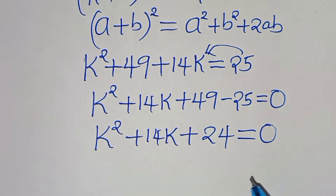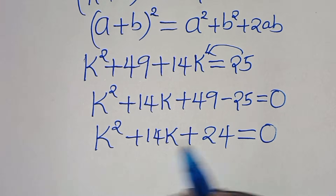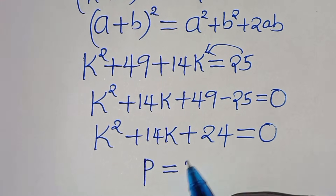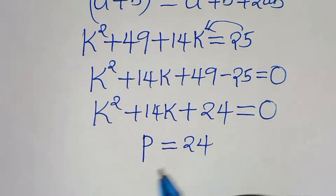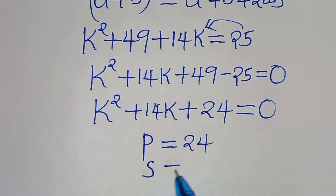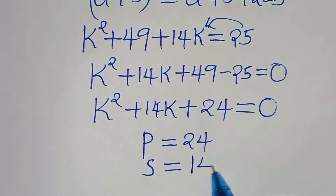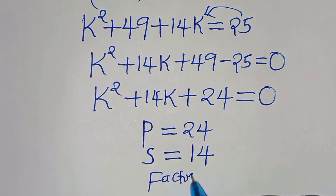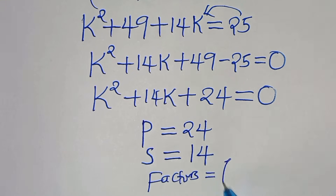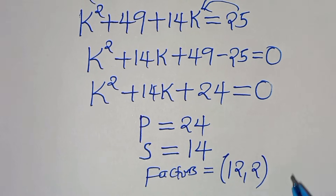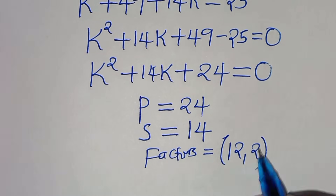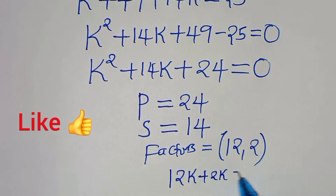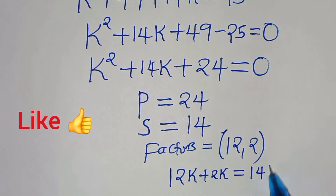We can solve this quadratic equation by factorization method, where we have the product equal to 24 and the sum equal to 14. The two factors are 12 and 2, so that 12k plus 2k is equal to 14k.